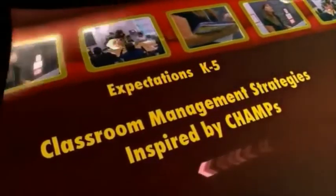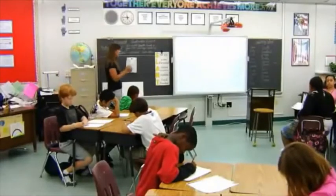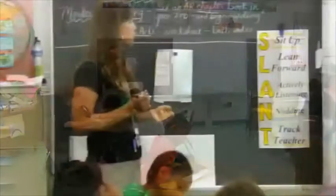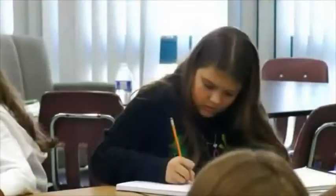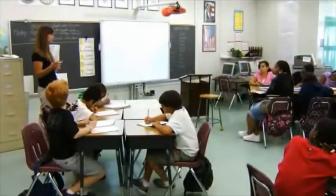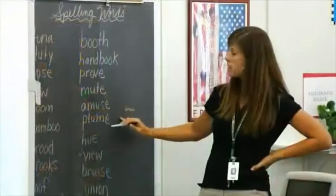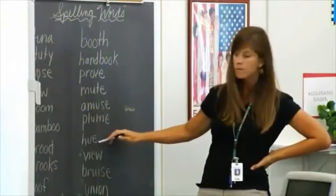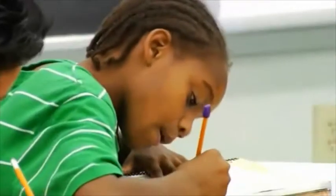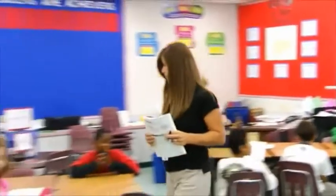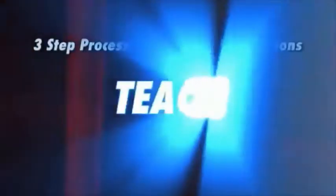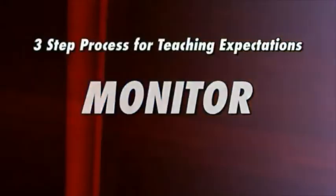Expectations, grades K through 5. Think about the expectations you have set for your class and for all of the transitions in your day and lessons in your curriculum. Are they clear in your mind? More importantly, have you made them clear to your students? Setting your expectations is important because you are more likely to get the behavior you want for each activity. There is a three-step process for teaching expectations. The steps are teach, monitor, and provide feedback.